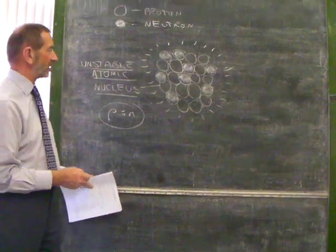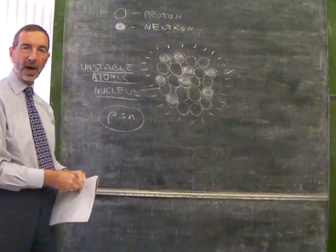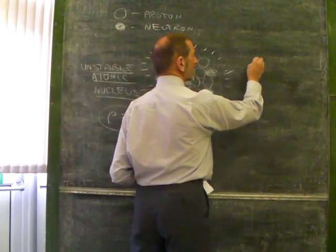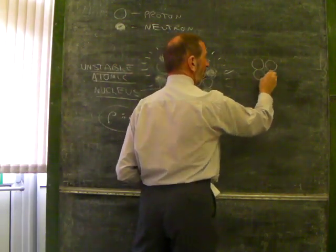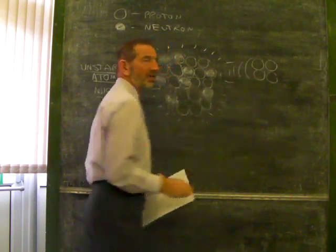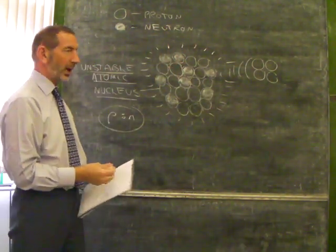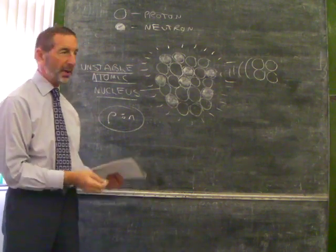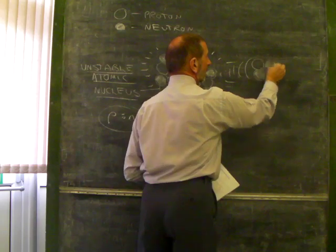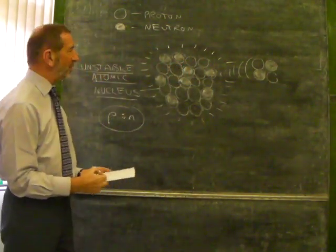Let's look at alpha radiation first of all. You may have heard of alpha particle. An alpha particle is a little piece, a little fragment of this nucleus, which is being ejected at very high speed. We can't tell when it's going to happen, but at some moment this will kick out this little piece, this little fragment of the nucleus.